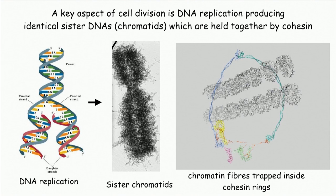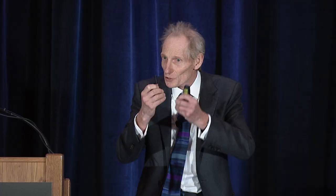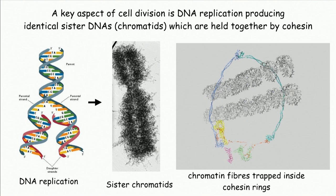Each chromatid will contain one DNA molecule, and this chromatid will contain its sister DNA. In order for those sister DNAs to be pulled to opposite sides of the cell, they must be joined together so the cell can tell that they are sister DNAs. These DNAs, packaged into chromatin fibers — little balls of DNA called nucleosomes — are held together by a complex called cohesin.